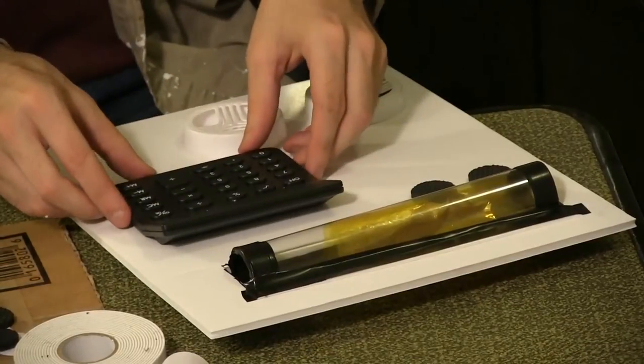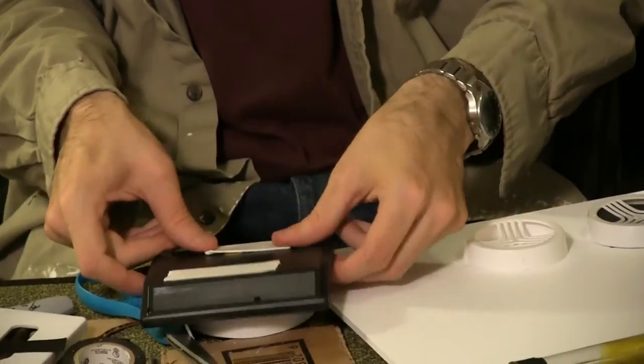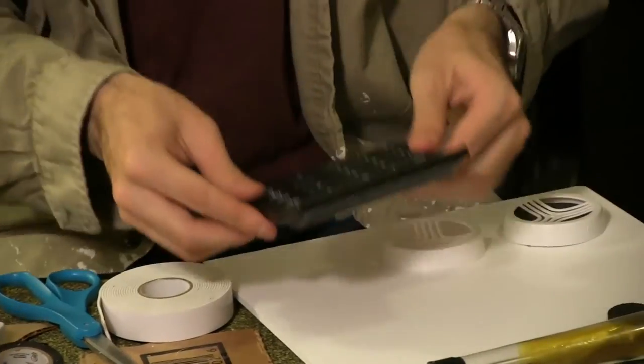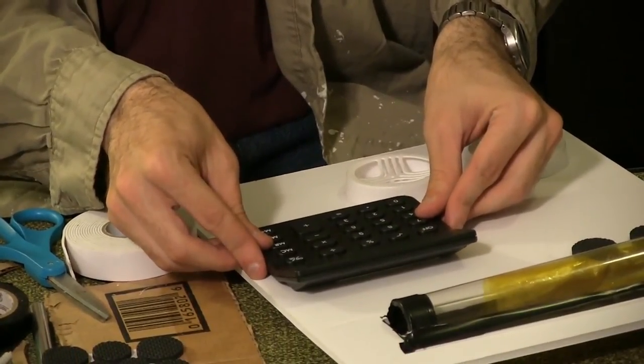Sometimes it's easiest to use ready-made buttons. Calculators are cheap and can quickly cover a board in hundreds of buttons. I used a bit of adhesive tape to mount mine on the board.